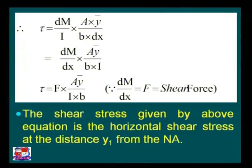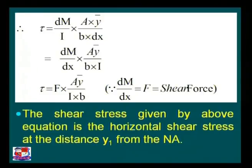We have already derived an equation for the variation of shear stress along a section: tau = F·A·Ȳ / (I·b), where F is the shear force acting at a particular section, I is the moment of inertia of the section, b is the width at the section, and A·Ȳ is the moment of area of the area above the section.